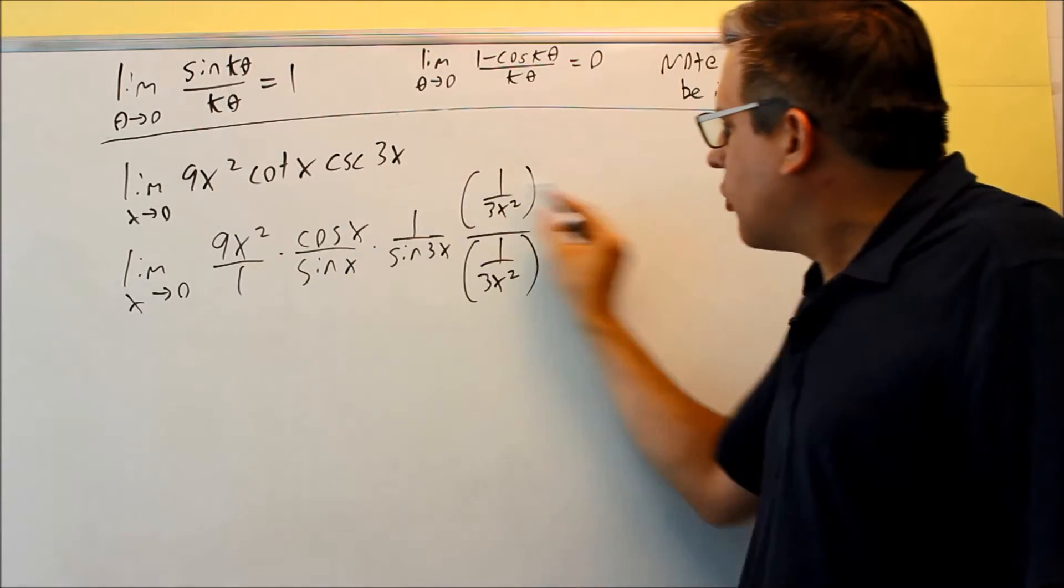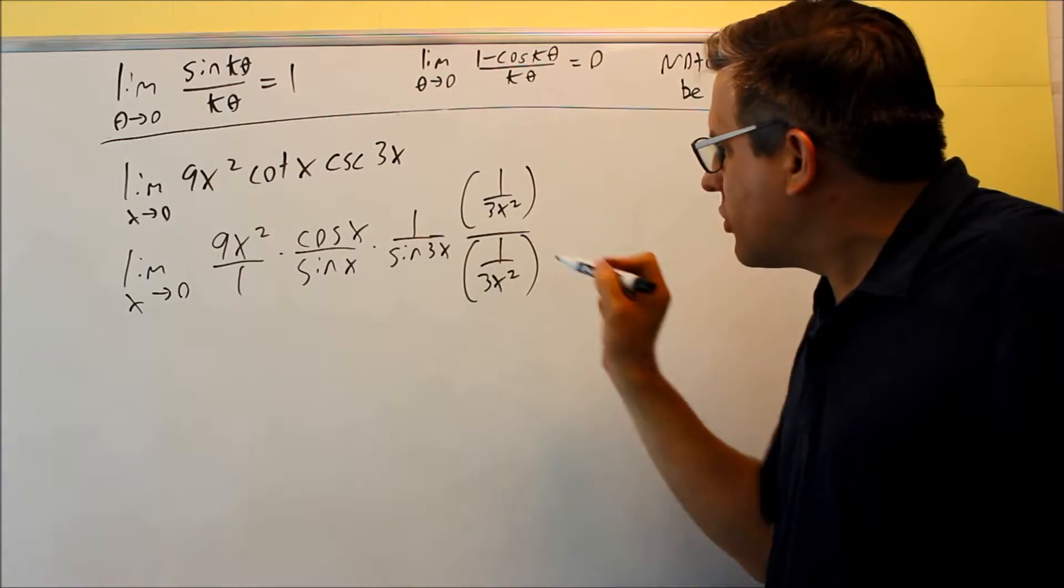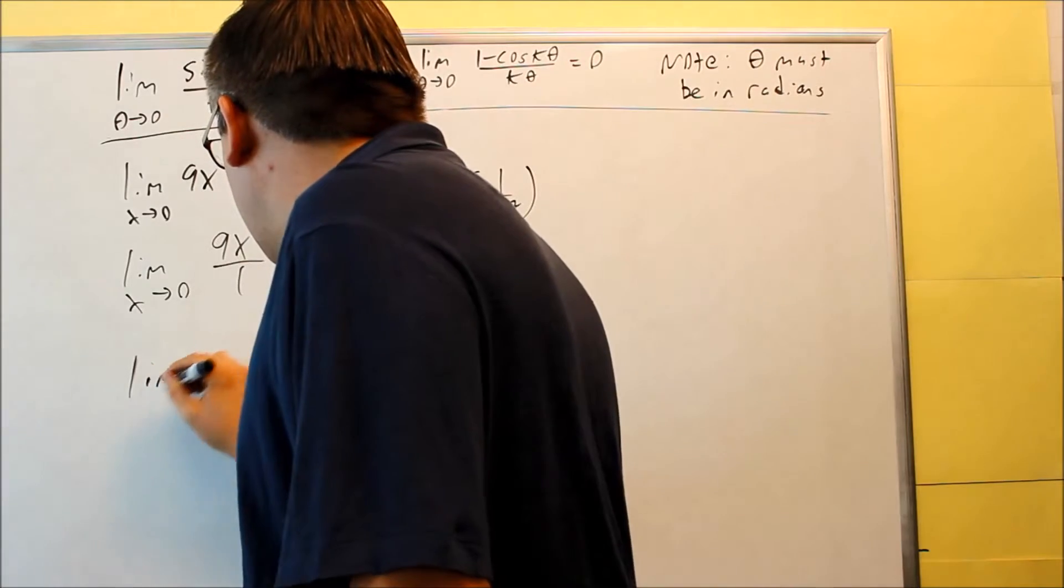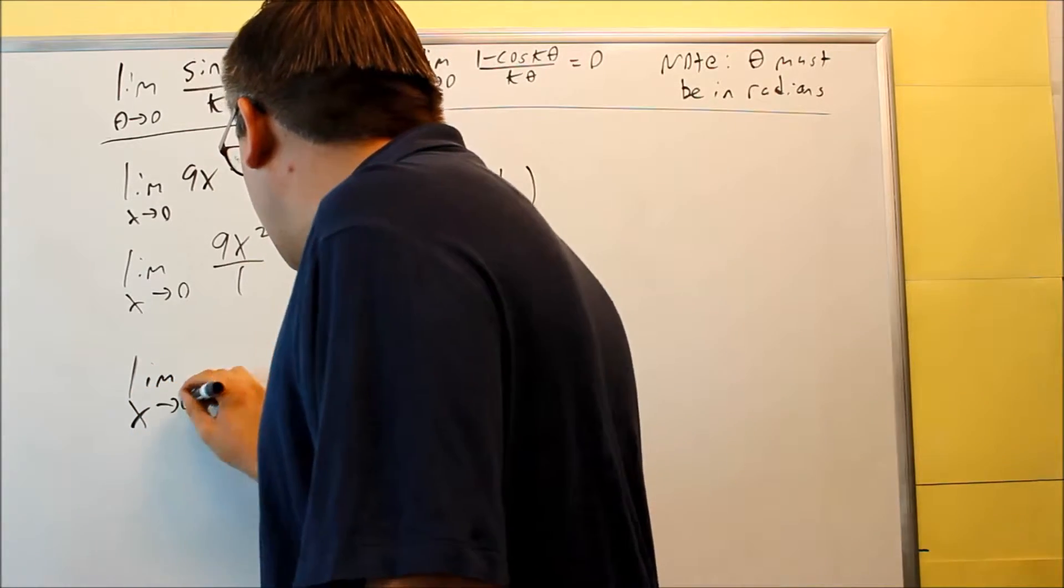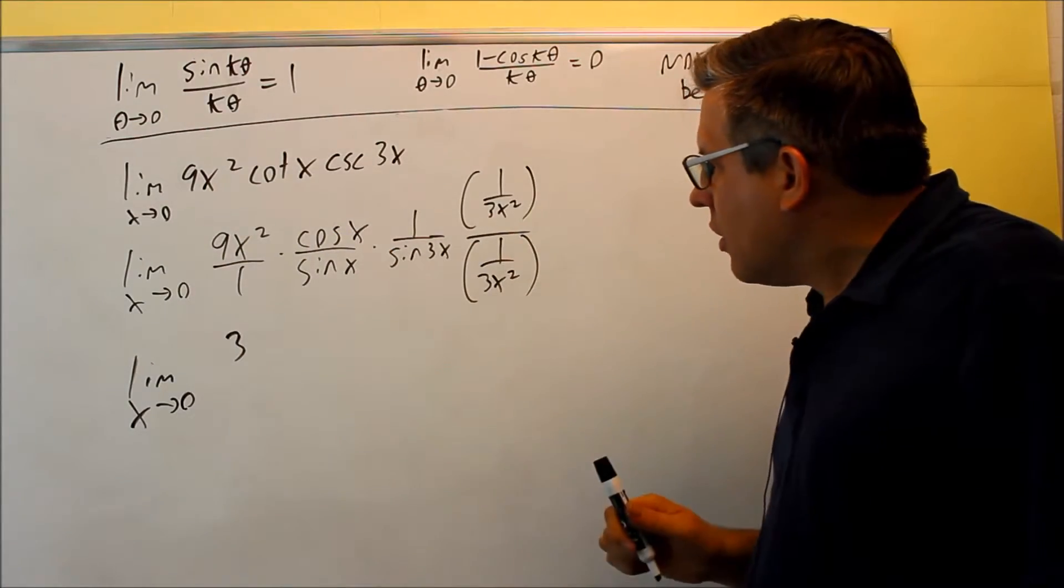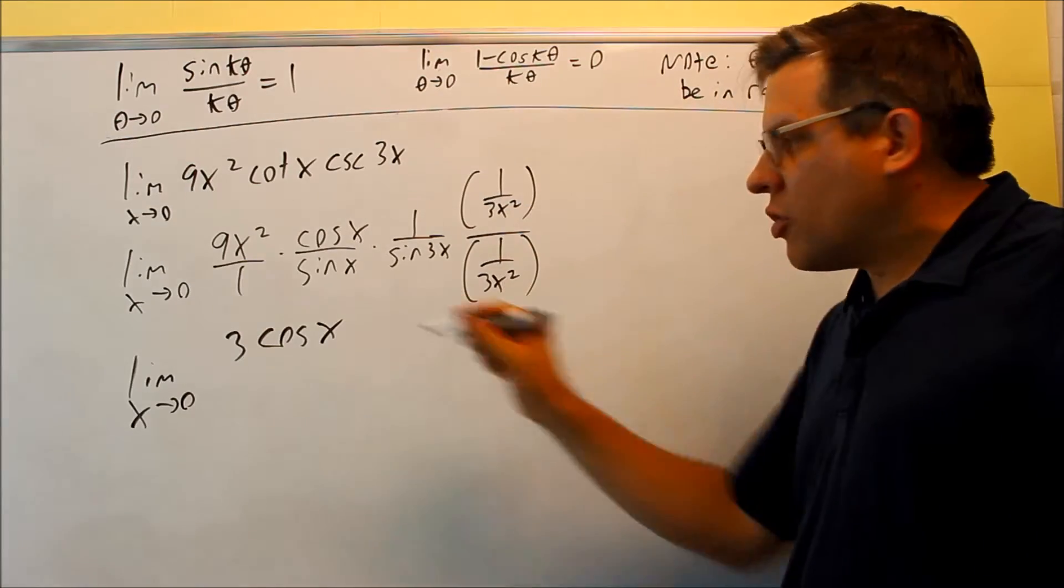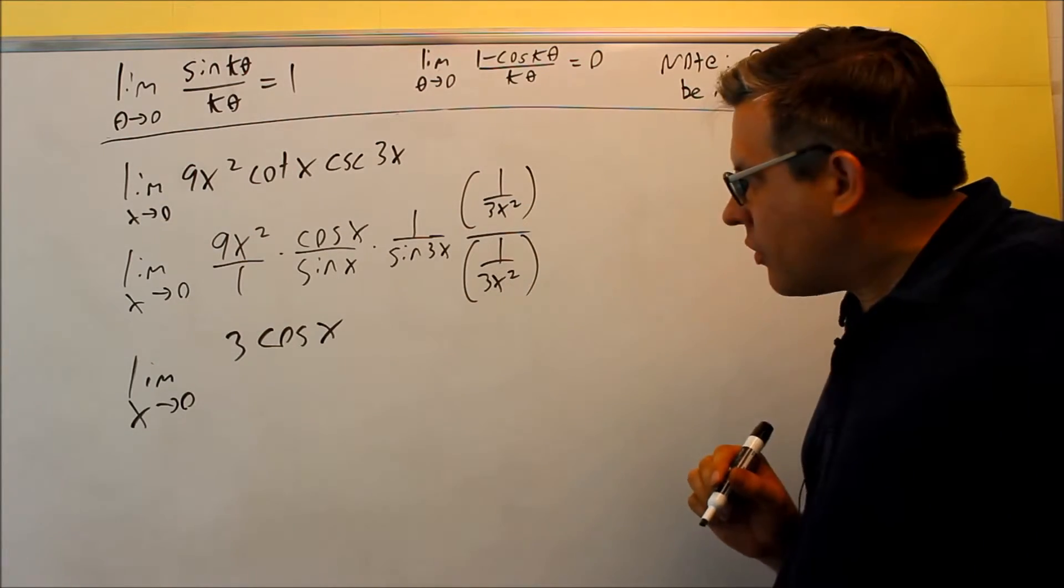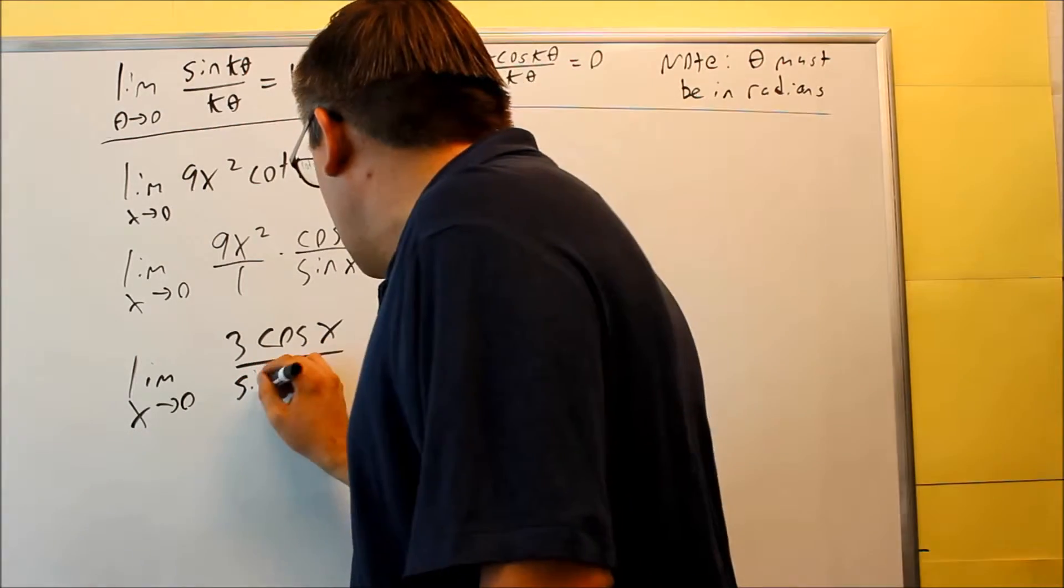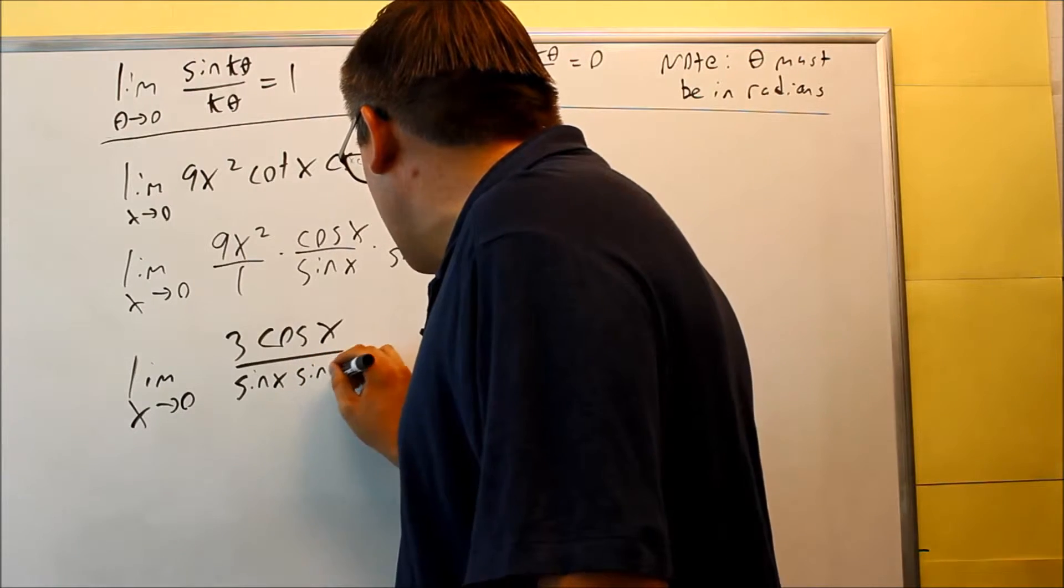So if I multiply across the top by this what will happen is a 9 and a 3 are going to cancel. The x squared are going to cancel as well. And here's what I'll be left with on top. Okay so on top I'll have a 3. 9x squared divided by 3x squared is 3. Then I'll have a cosine x and there's a 1 there. So 3 cosine is all I'm going to end up with on the top.